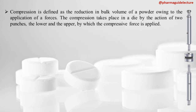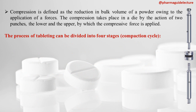Compression is defined as reduction in the bulk volume of the powder owing to the application of forces. When force is applied to the powder, its bulk volume is reduced. This compression takes place in a die by the action of two punches — the upper punch and the lower punch — which apply the compression force.